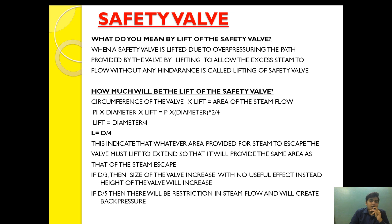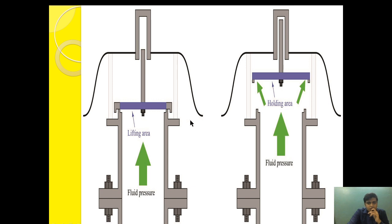The next question — often asked in MMD Class 4 and Class 2 exams — is: what do you mean by the lift of a safety valve? When a safety valve is lifted due to over-pressurizing, the path provided by the valve by lifting to allow the excess steam to flow without any hindrance is called the lifting of a safety valve. This path allows excess steam to be released into the atmosphere, preventing the system from over-pressurizing.